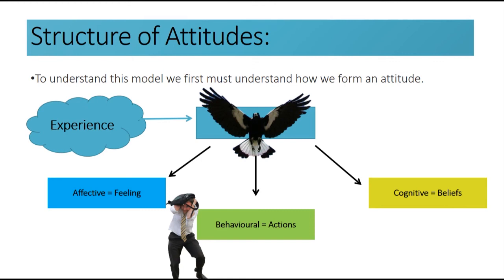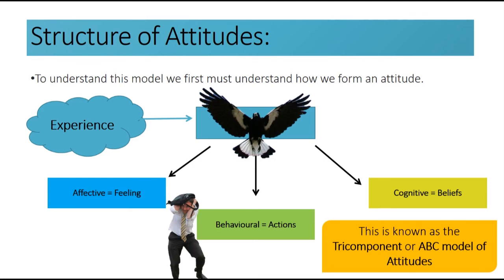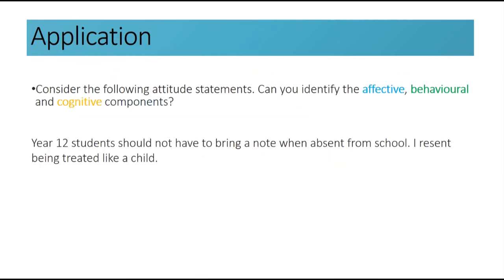Think of an attitude you have and see if you can break it down into these components yourself. Let's apply what we've learnt so far. Consider the following attitude statement: 'Year 12 students should not have to bring a note when absent from school. I resent being treated like a child.' The affective component is the feeling of resentment. The behavioural component is likely to be not bringing a note from home when absent from school. And the cognitive component is the belief that Year 12 students should not be treated like children and therefore should not need to bring a note for their absences.